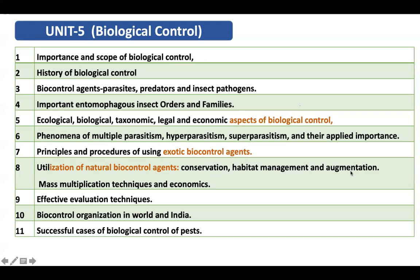Another topic is mass multiplication techniques and their economics. There are different techniques for mass multiplication, and several agencies supply biocontrol agents to farmers and for research. Different parasitoids are reared using different methods — for example, Trichogramma egg parasitoids have a specific rearing method, and larval parasitoids have a different method. Each needs to be studied separately.